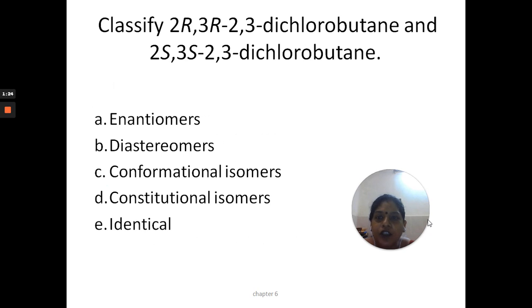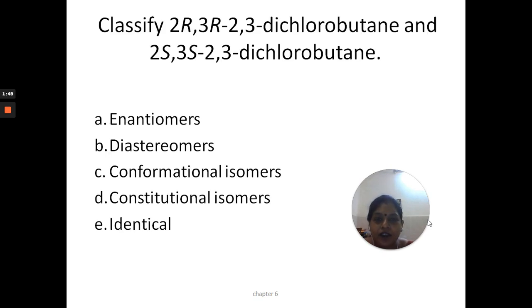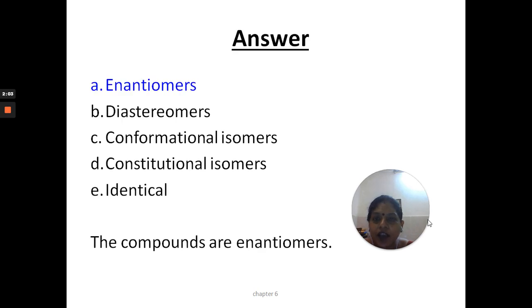The third question: classify 2R,3R-2,3-dichloropentane and 2S,3S-2,3-dichloropentane as an enantiomer, diastereoisomer, conformational, constitutional, or identical. You can see that in one figure it is R and in the other it is S. The answer is enantiomers — at one isomer it is R and at the same position in the mirror image it is S, and hence they are not superimposable on each other. Therefore the answer is enantiomer.